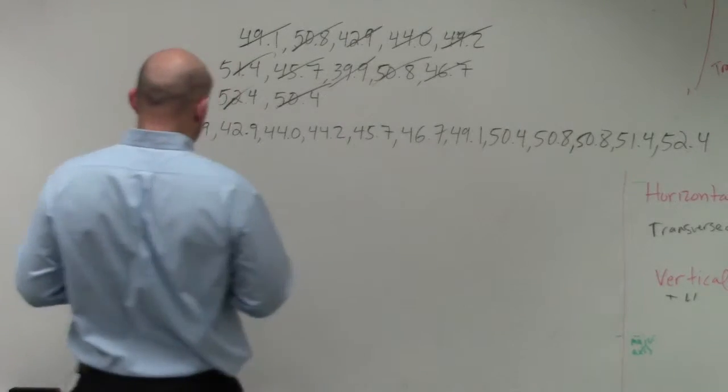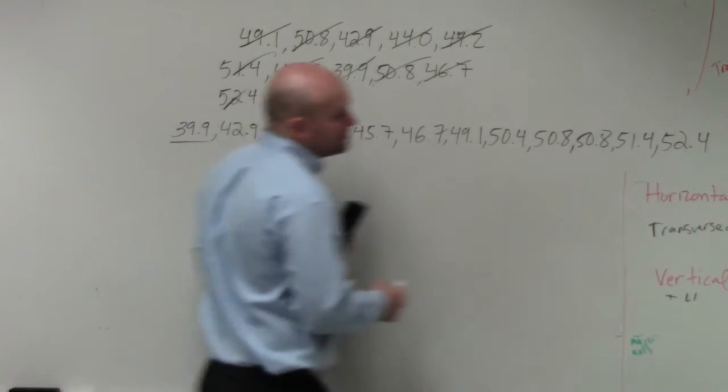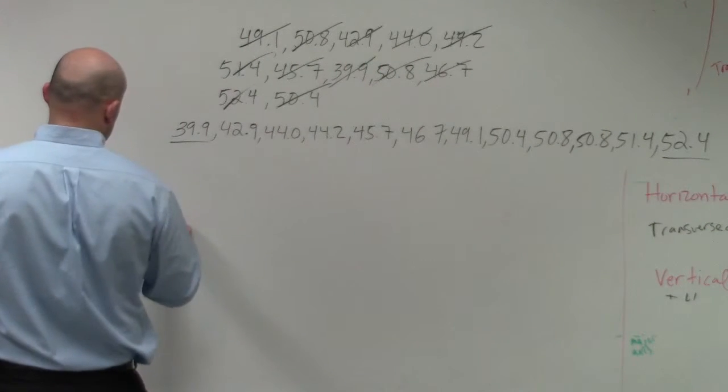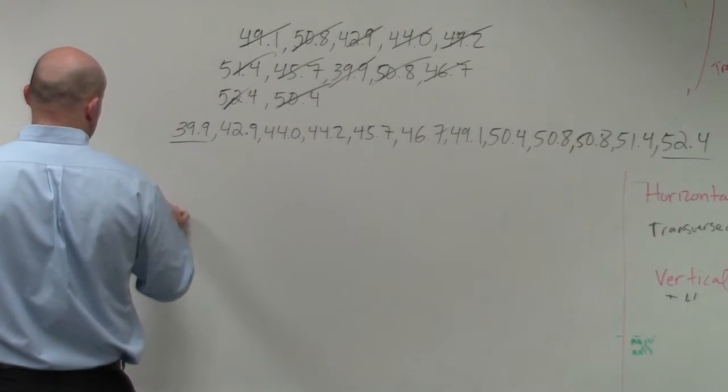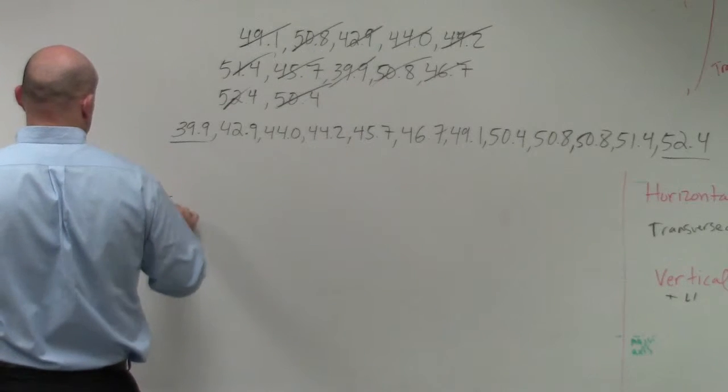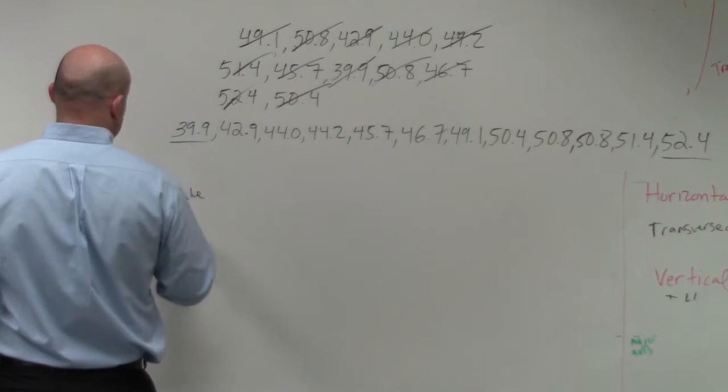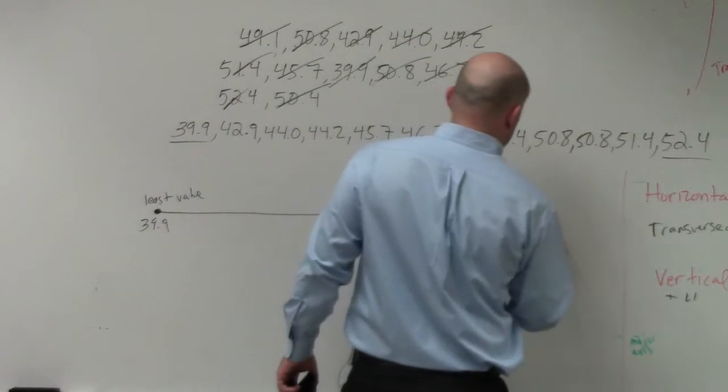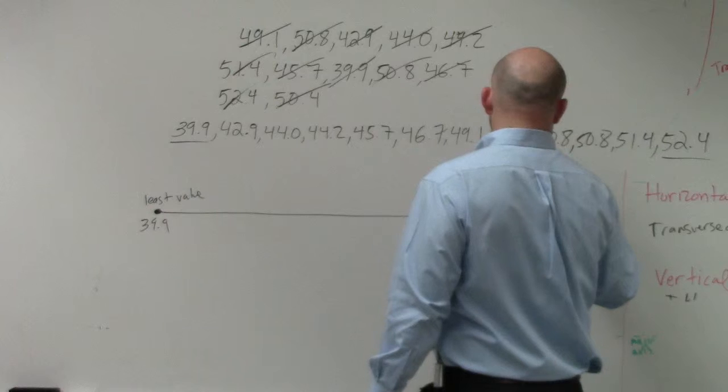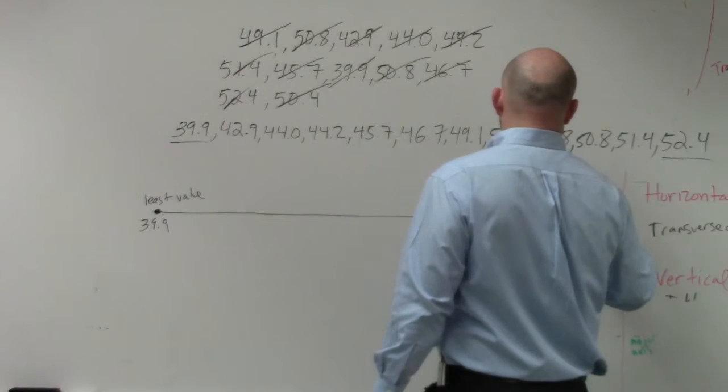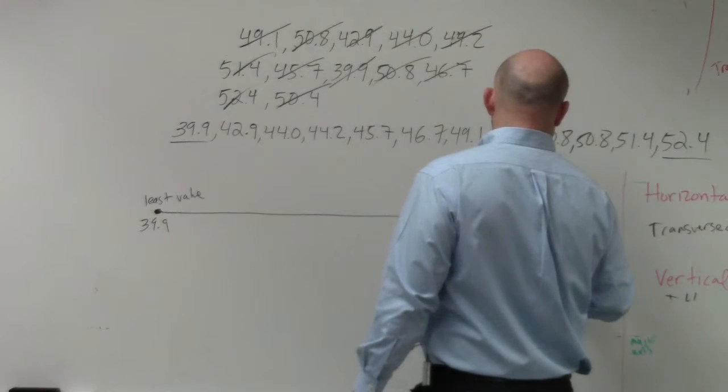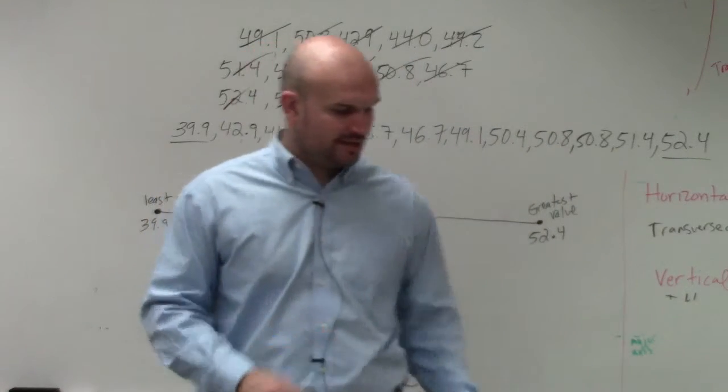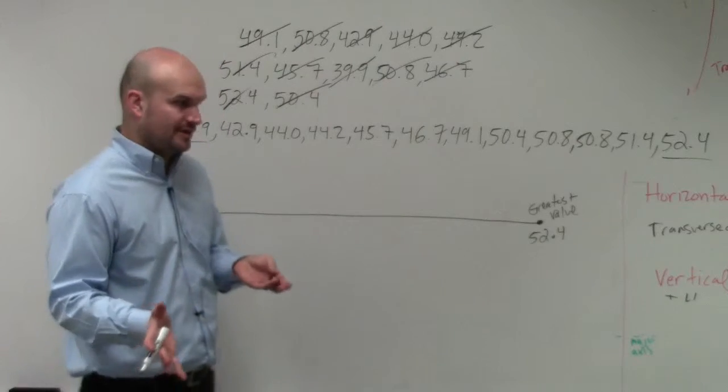To arrange a box and whisker plot, the first thing we're going to do is the easiest, is find the minimum and the maximum value. So I have my least value is going to be 39.9, and then my greatest value is 52.4. Does everybody see how I created the initial parts of my box and whisker? The least all the way to the greatest.